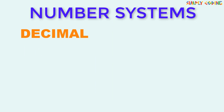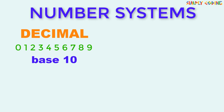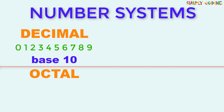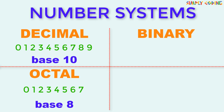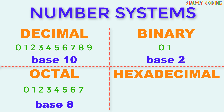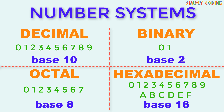To summarize, the number system we use is called the decimal number system and it comprises of 10 digits from 0 to 9. Since it has 10 digits, its base or radix is 10. Then we have the octal number system which has base 8, with only 8 numbers from 0 to 7. Then we have binary number system which is used in computers and it has only 2 numbers, 0 and 1, so it has base 2. We also have hexadecimal number system which has base 16, so 16 symbols starting from digit 0 to 9 and then A to F.